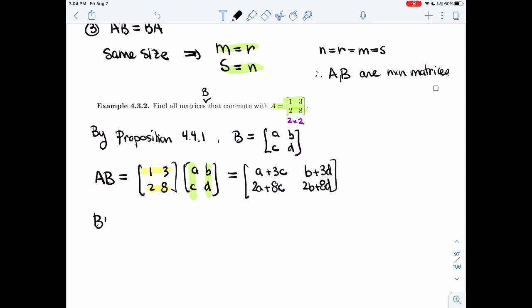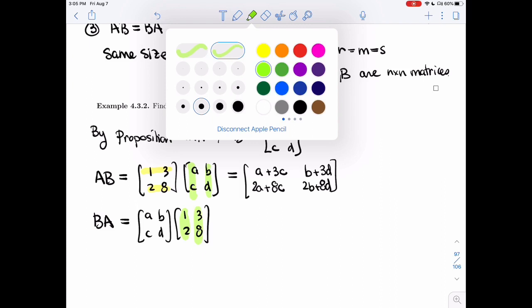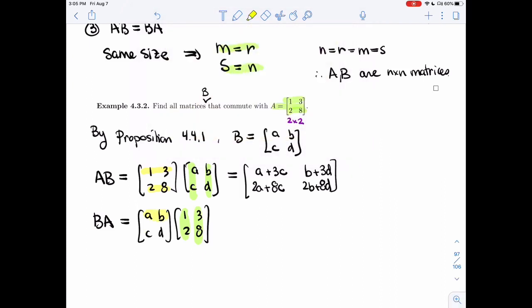Then when I look at BA, I'm going to be switching these matrices. And notice that commuting is not trivial because now I'm not looking at the same factors at all. For AB, I'm looking at 1, 2, 3, 8. I'm no longer looking at 1, 3 and 2, 8.